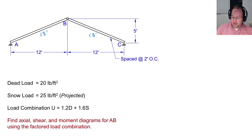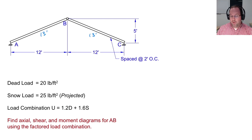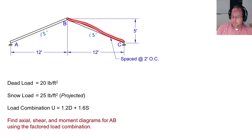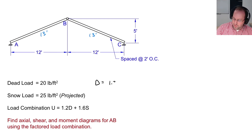For my load combination using LRFD factored design, I'll use 1.2 times dead plus 1.6 times snow. Ultimately I want to find the axial, shear, and moment diagrams for member AB. Because the truss is symmetric, member BC will have the same diagrams, so we'll only solve for AB.